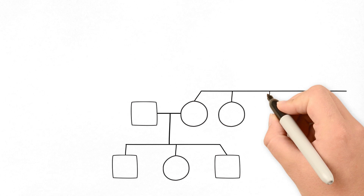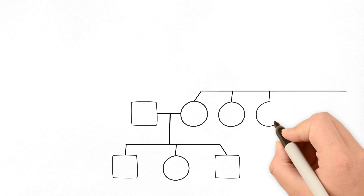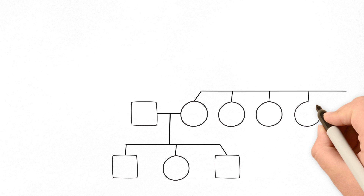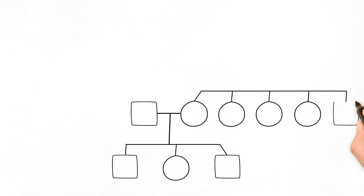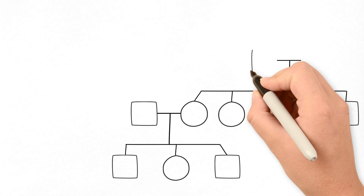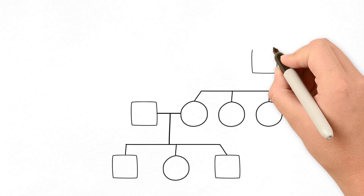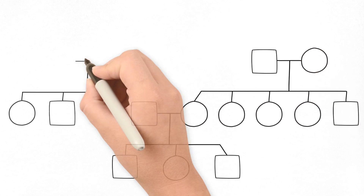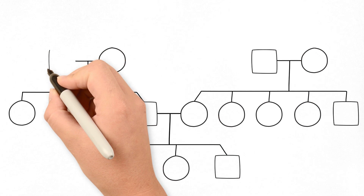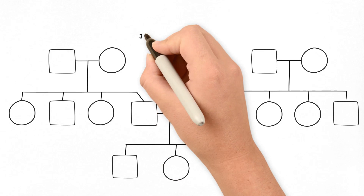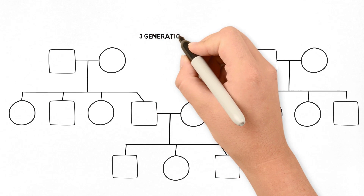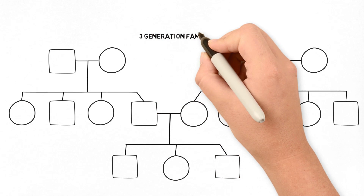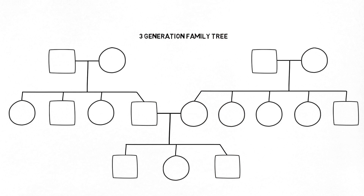Step four: ask about how many brothers and sisters your patient has and about her parents, and also add in how many brothers and sisters her partner has and his parents. Now you have drawn a three-generation family tree, which is the gold standard in clinical genetics. The next step depends on what your patient is worried about in her family.